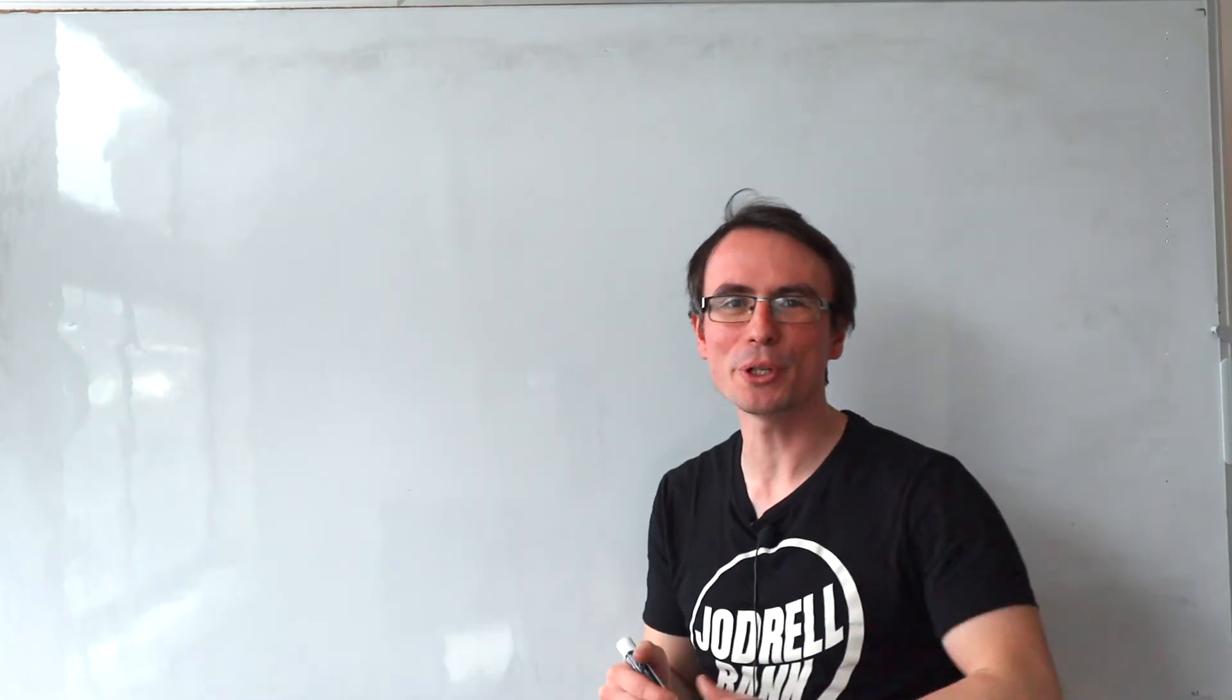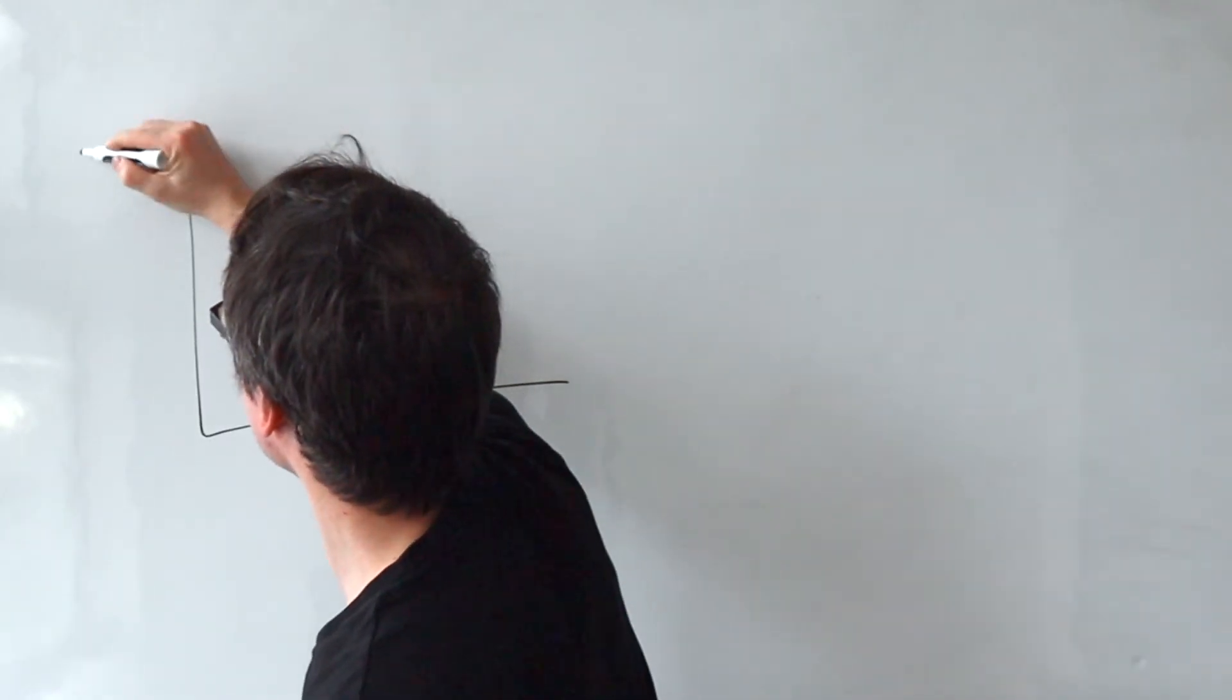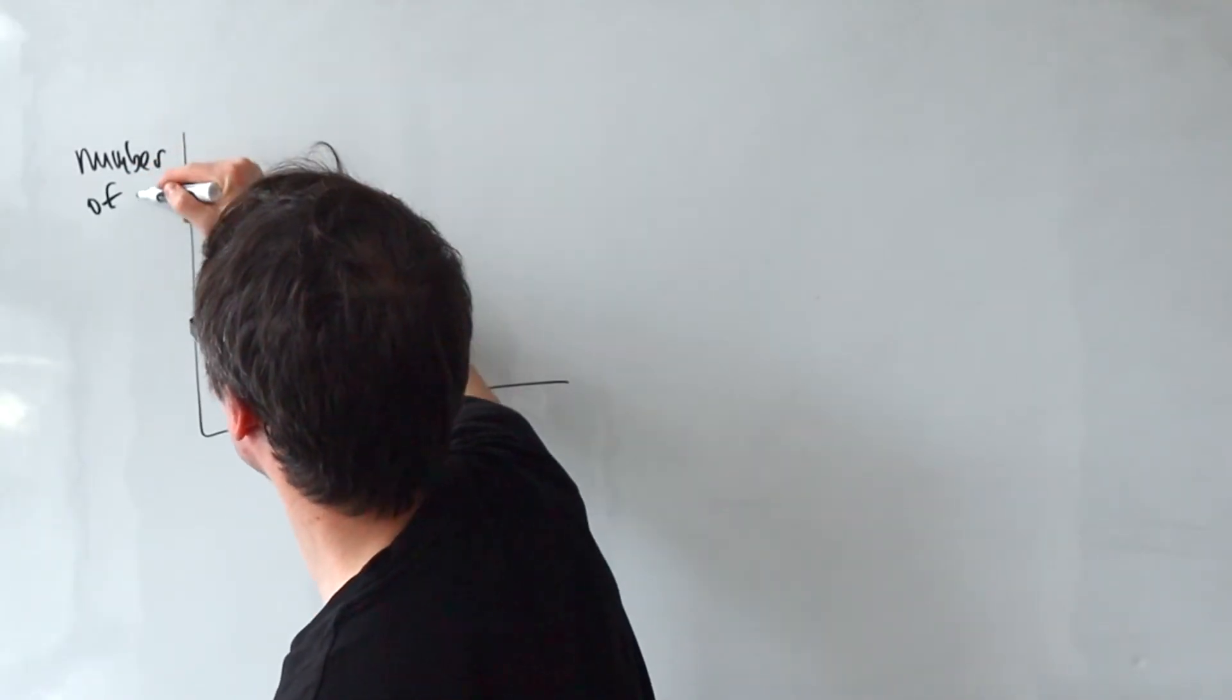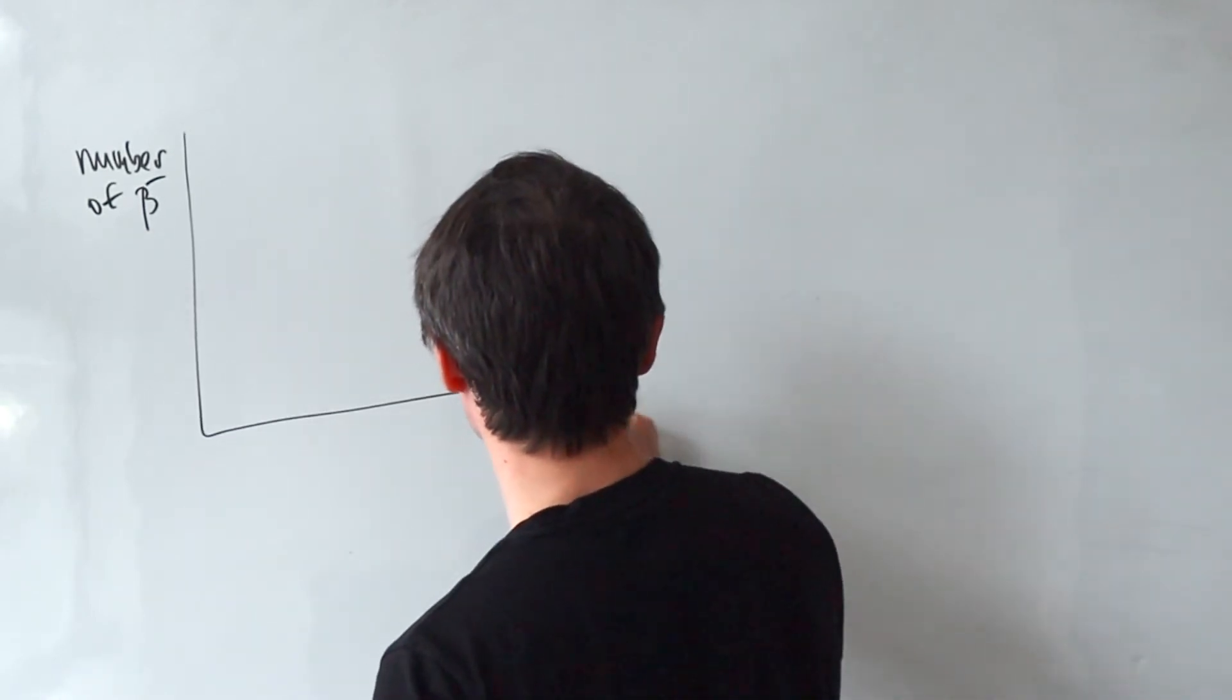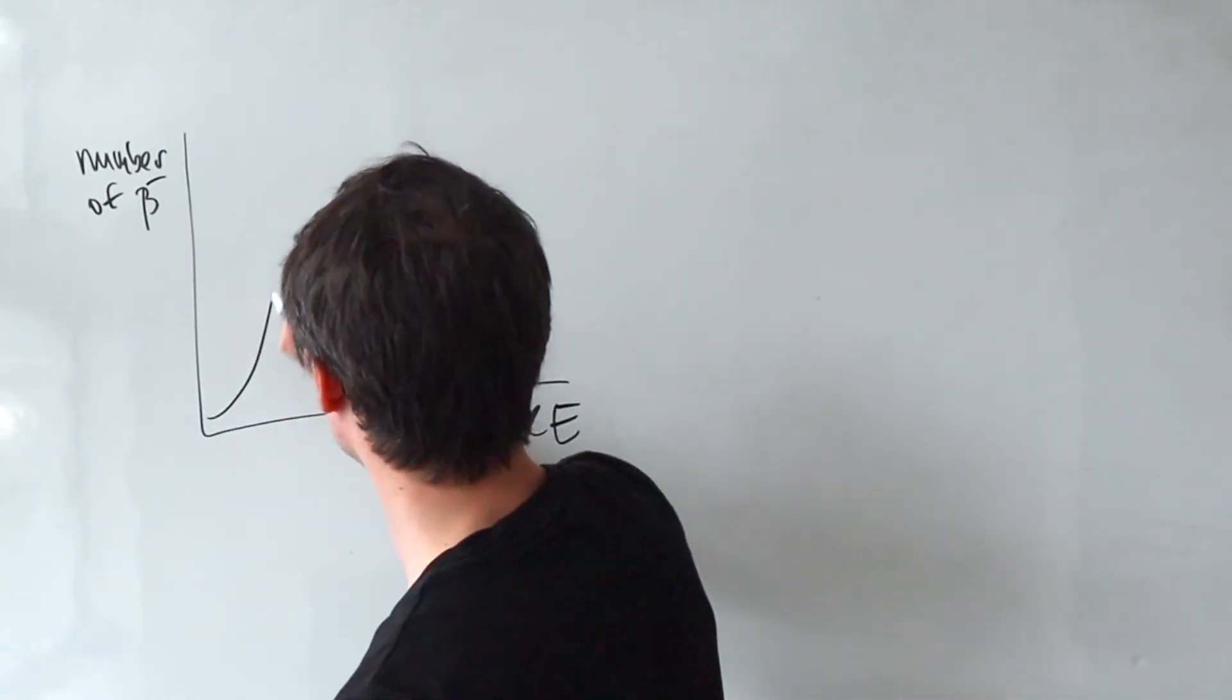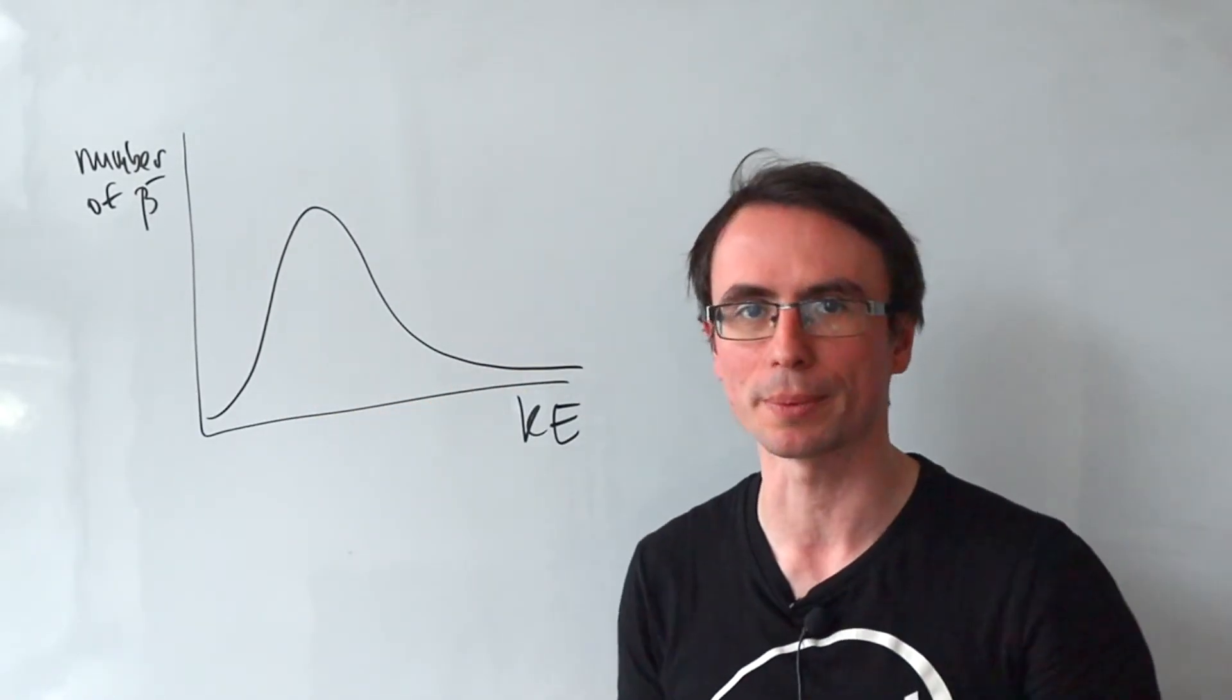Now, here's a tricky concept from nuclear and particle physics. If you had a graph of the number of particles or a number of, let's call it beta minus particles, against their kinetic energy, it will not be an equal curve. In fact, it will be some sort of a random distribution similar to the Maxwell-Boltzmann distribution.